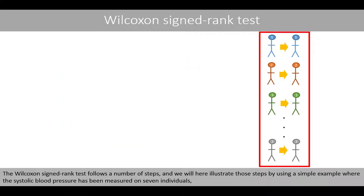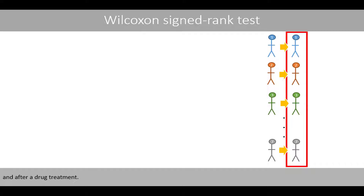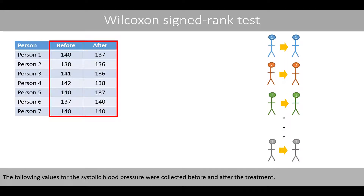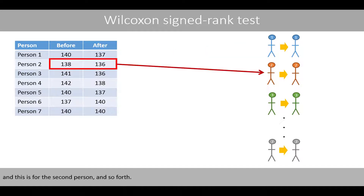The Wilcoxon Signed-Rank test follows a number of steps, which we will illustrate using a simple example where the systolic blood pressure has been measured on seven individuals before and after a drug treatment. These two values come from the systolic blood pressure before and after the treatment of each person respectively.